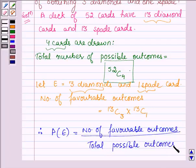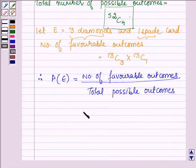So, this is further equal to 13C3 into 13C1 upon 52C4.